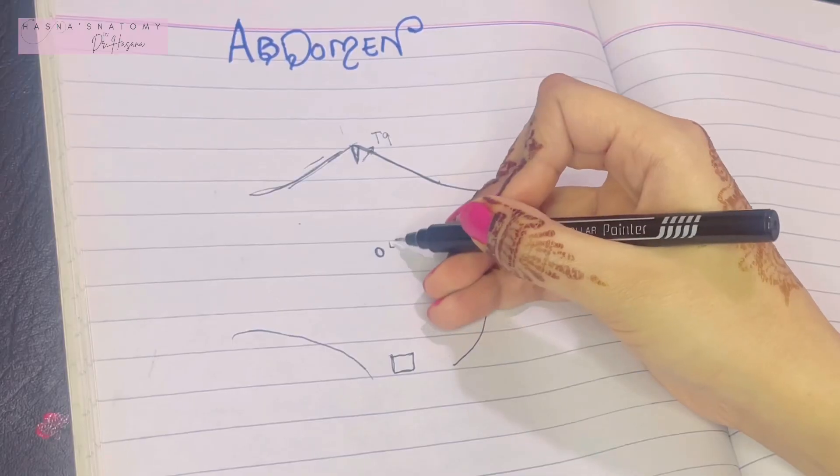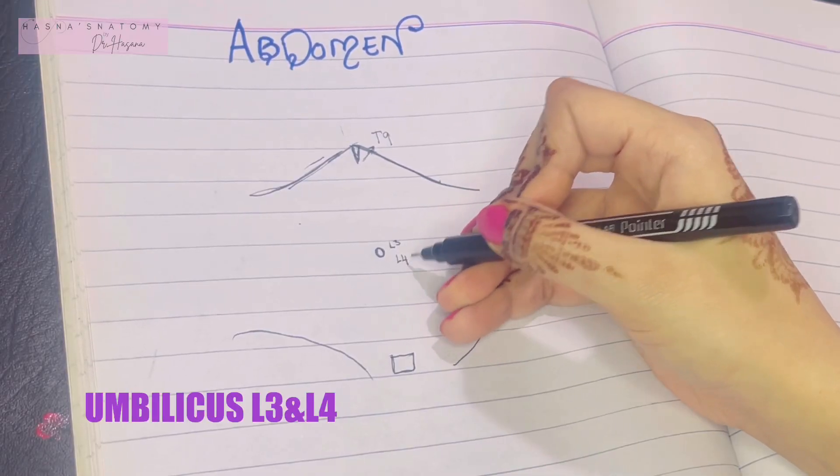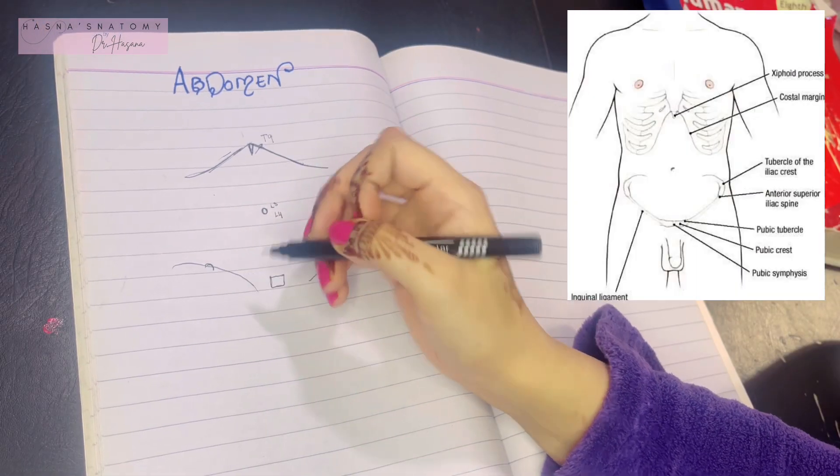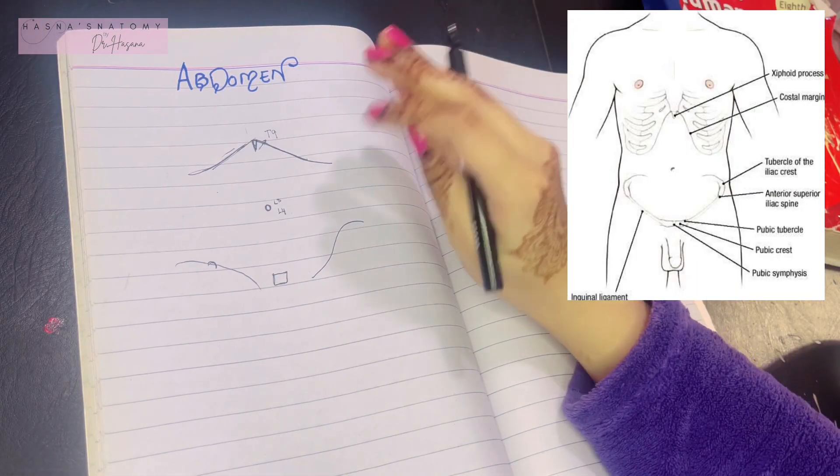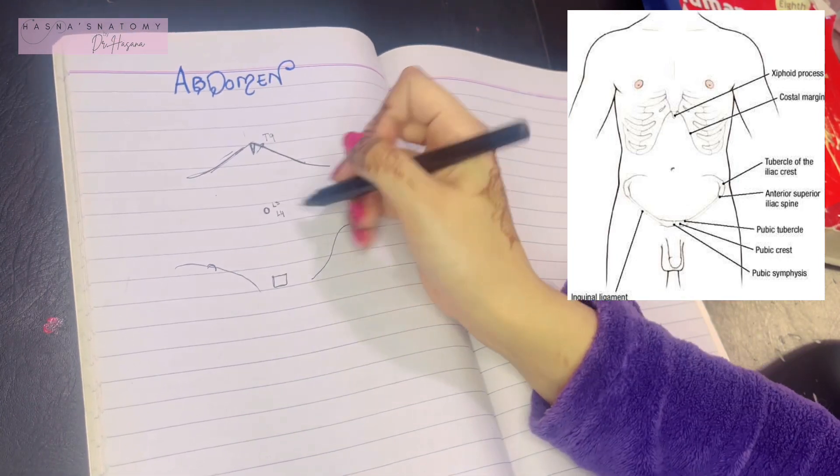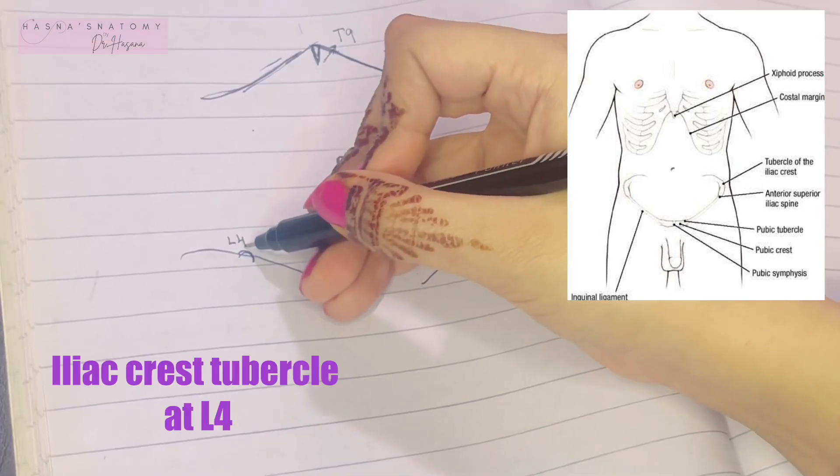The iliac crests have the highest point called the iliac tubercle. If you remember, it was five centimeters behind the anterior superior iliac spine. This is located on the L4 level of the vertebra.